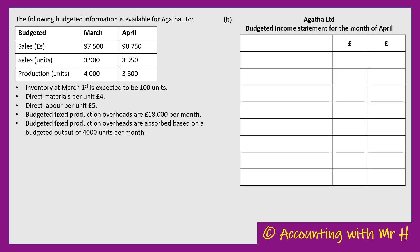Let's go on to Part B. We were asked to prepare a budgeted income statement for the month of April using absorption costing. I've laid mine out with the title: Agatha Limited — budgeted income statement for the month of April. Just like any income statement, I'm going to start with revenue. For April, the budgeted sales in pounds is £98,750, so that goes straight in.